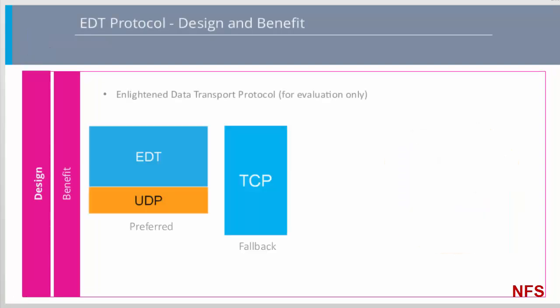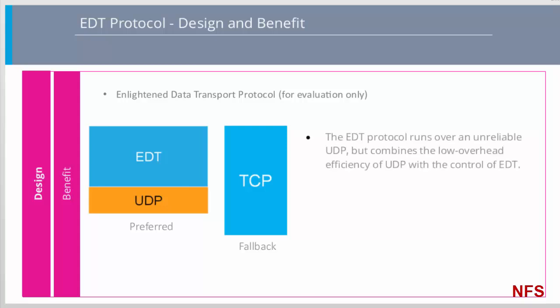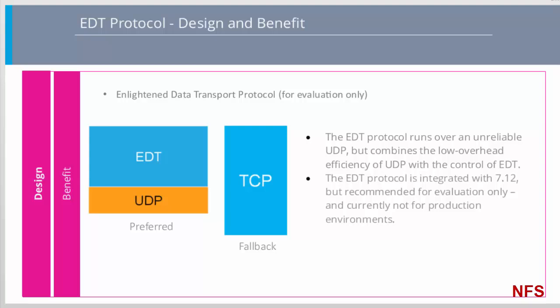EDT is a Citrix protocol that sits just above the transport layer, adding link awareness and application awareness — hence the enlightenment — to the transport of packets between client and server. When running EDT over UDP, we get the best of both worlds: the fast and low-overhead bandwidth efficiency of UDP, matched with the session reliability and end-to-end control enforced by EDT. In other words, EDT supports reliable data delivery over an underlying unreliable UDP transport layer.